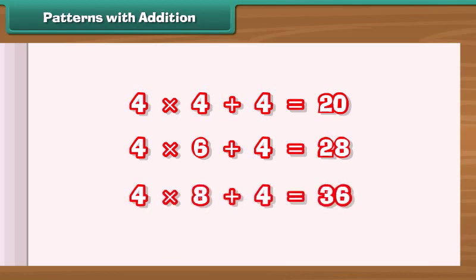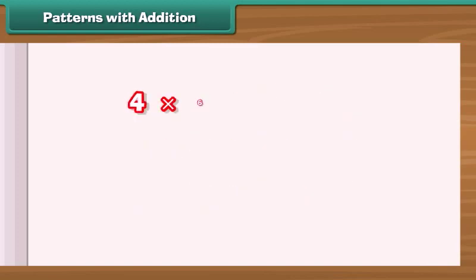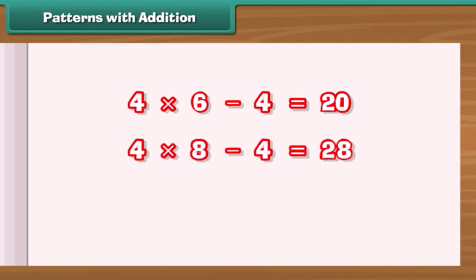There is one more interesting fact. Each sum is 4 less than 4 times the third term. 4 into 6 minus 4 is 20. 4 into 8 minus 4 is 28. 4 into 10 minus 4 is 36.